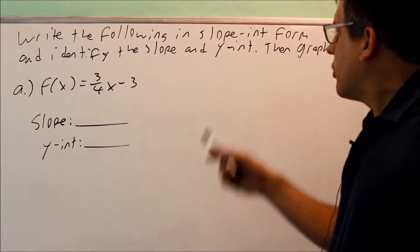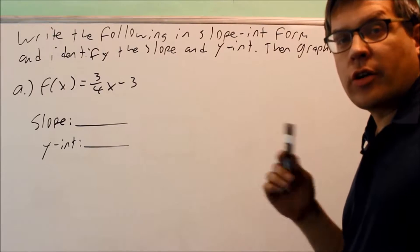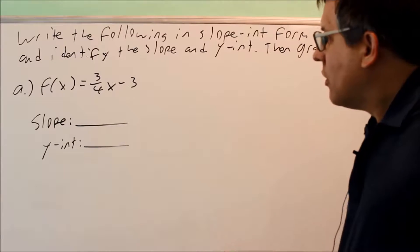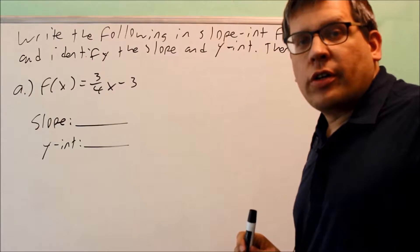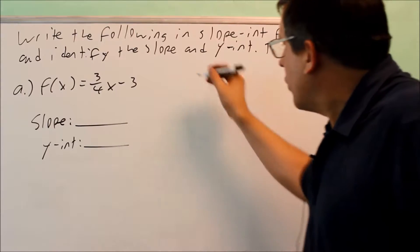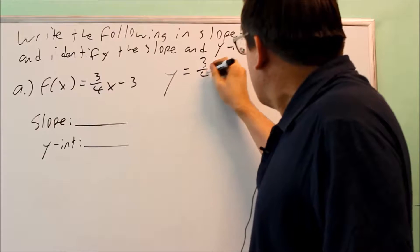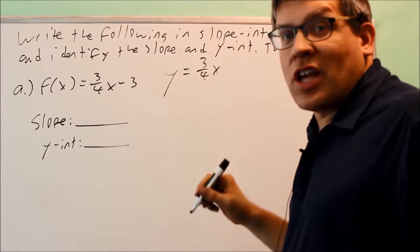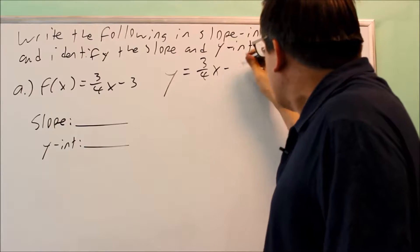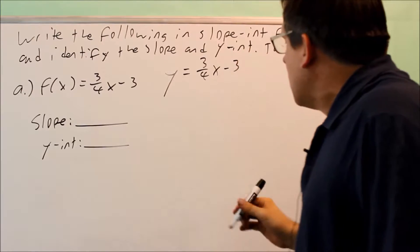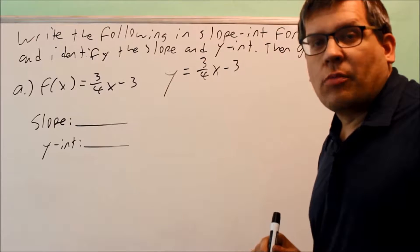We're going to write the following equation in slope-intercept form, identify the slope and the y-intercept, and then graph it. This particular equation is already written in slope-intercept form. The only thing we have to do is put a y in place of f(x), since y is the same thing as f(x). So that part's done — we want to find the slope and the y-intercept.